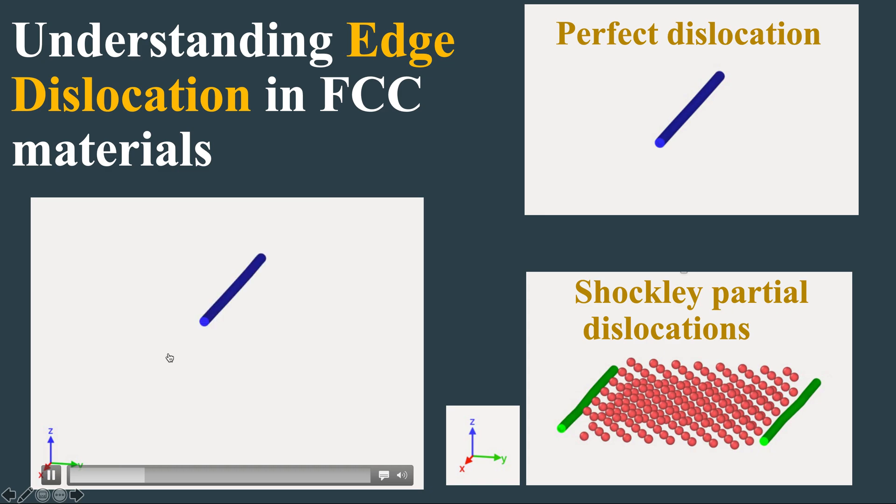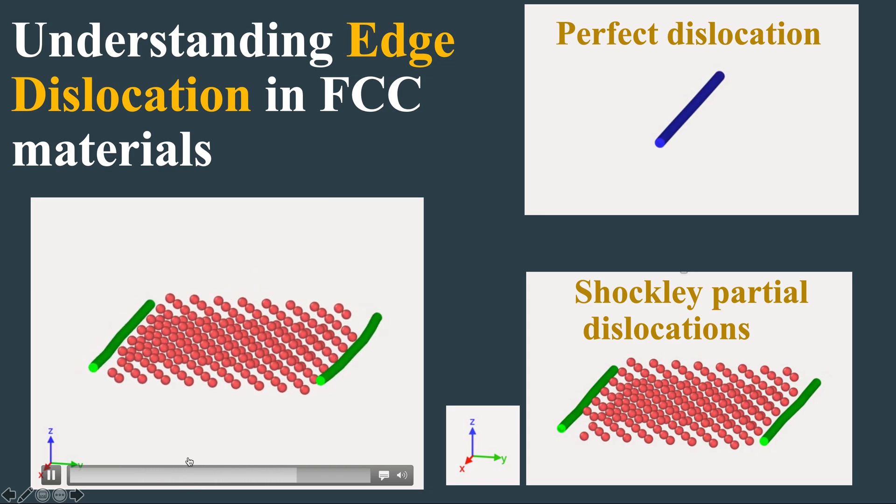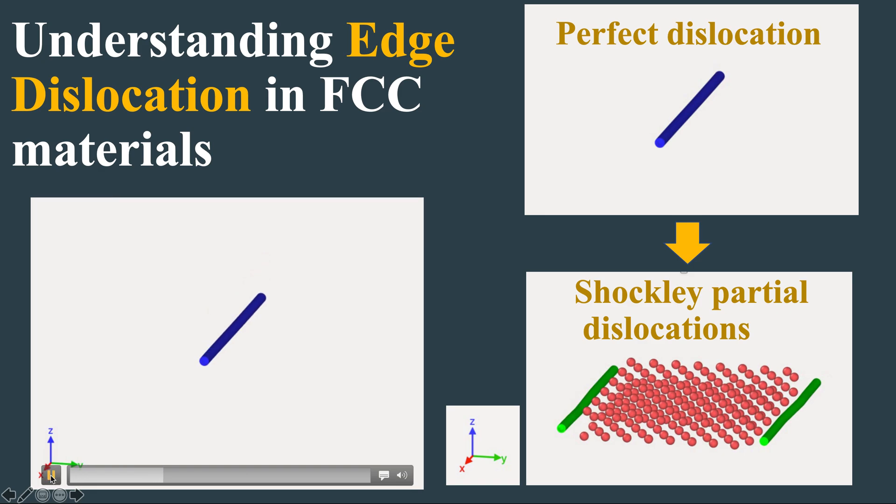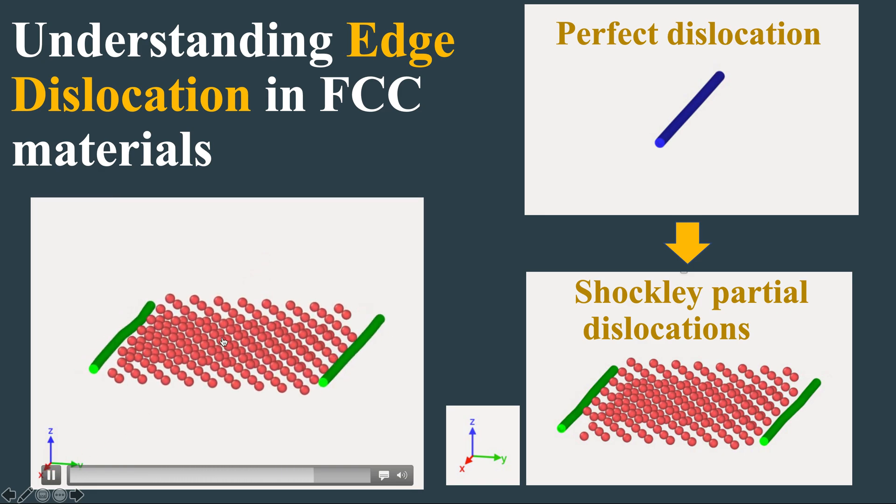And I show a movie here. You can see that a perfect dislocation actually splits into two Shockley partial dislocations. So why this happens and how do we understand this? And the red atoms you are seeing are actually the HCP atoms which are ABAB stacking.